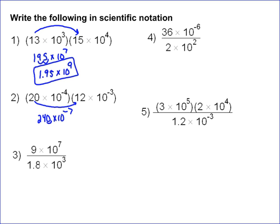We're moving two places to the left, so that gives us 2.4. Since we moved to the left, you add 2 to the exponent. So 2.4 times 10 to the negative 5th is your answer.